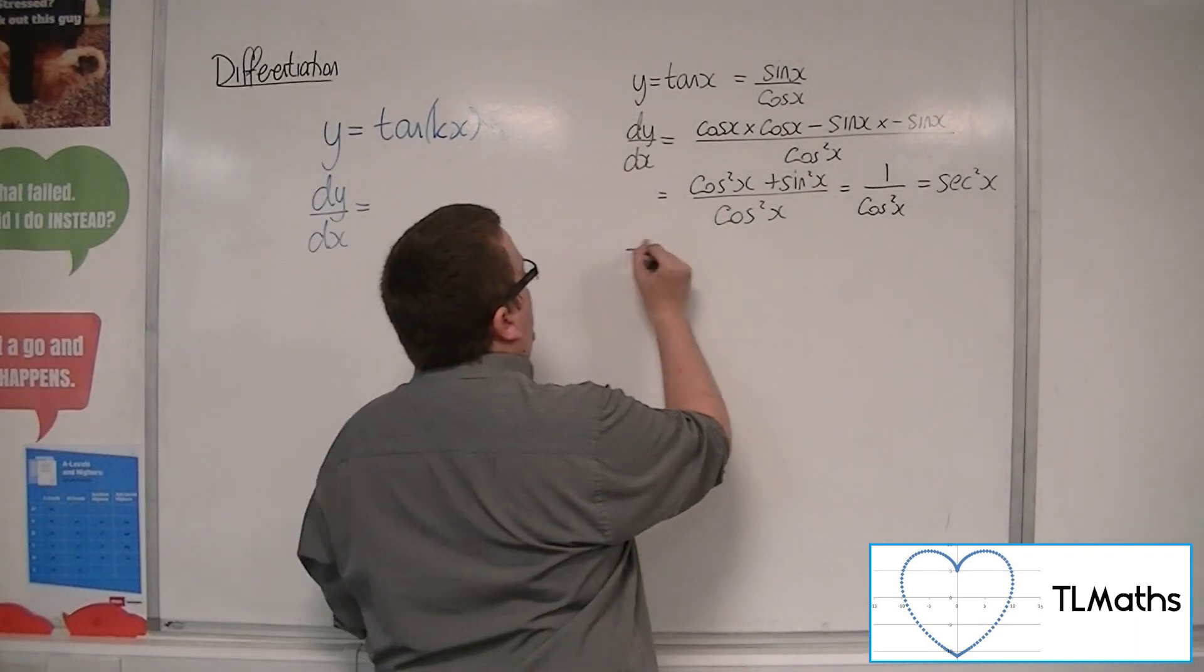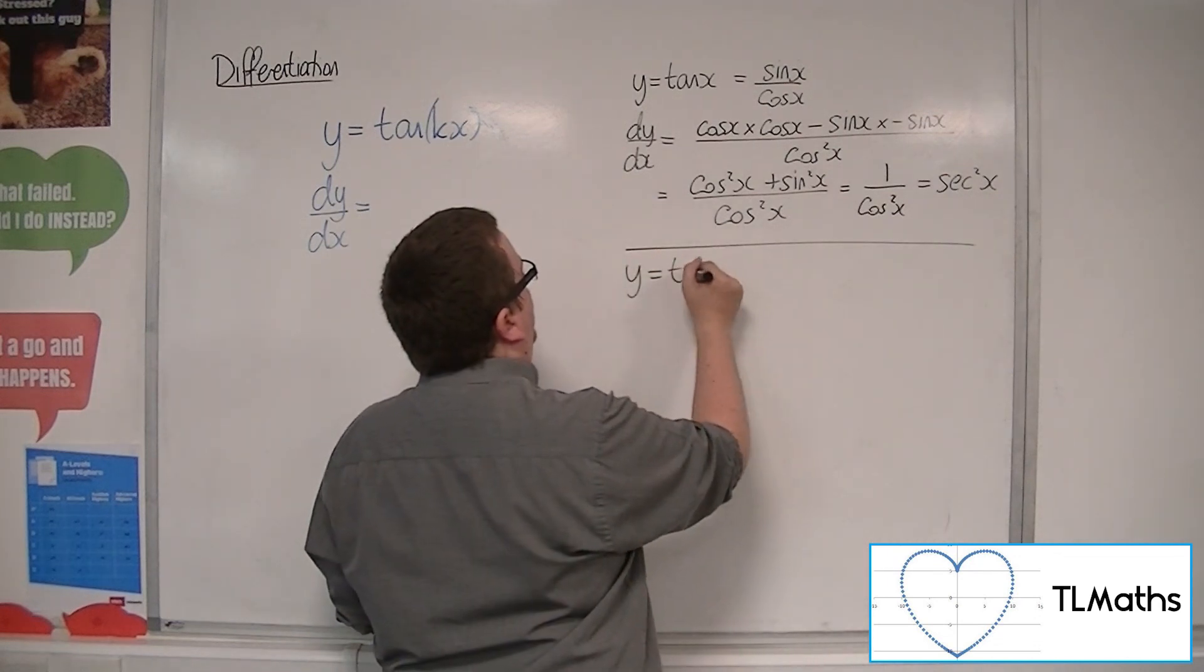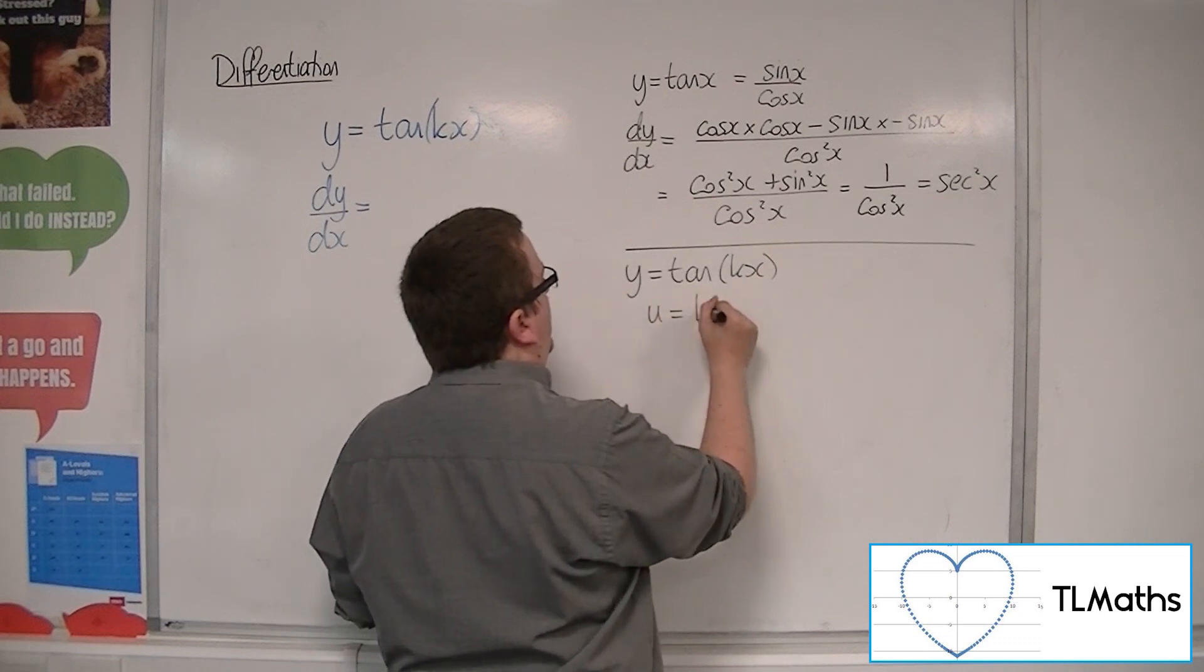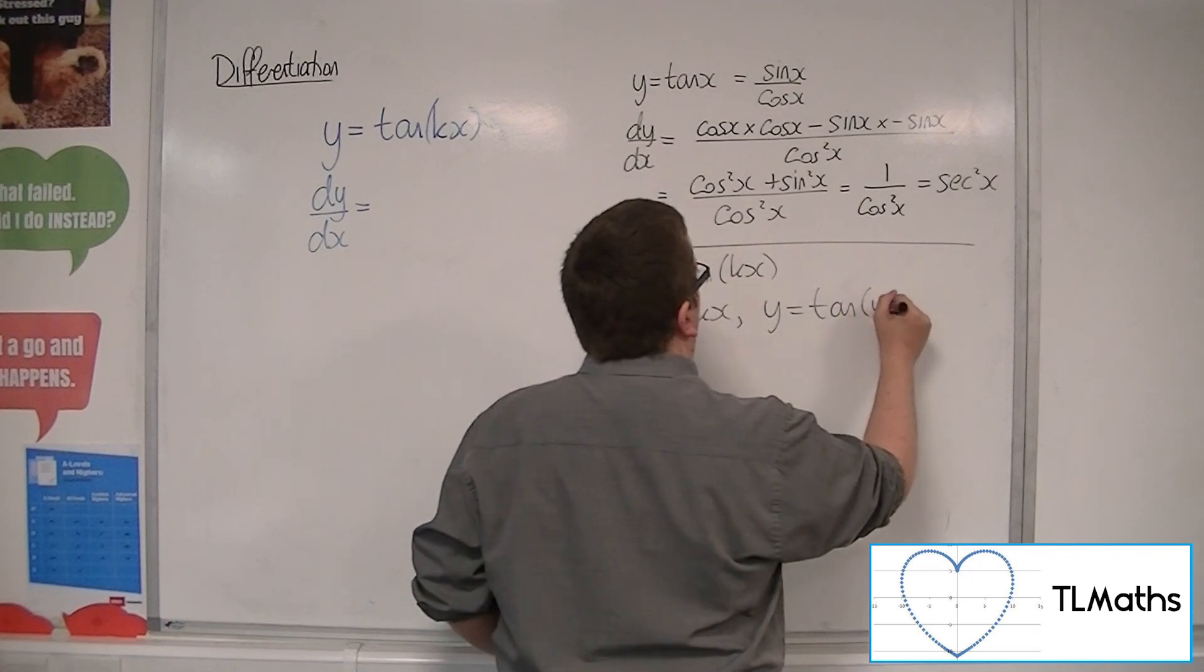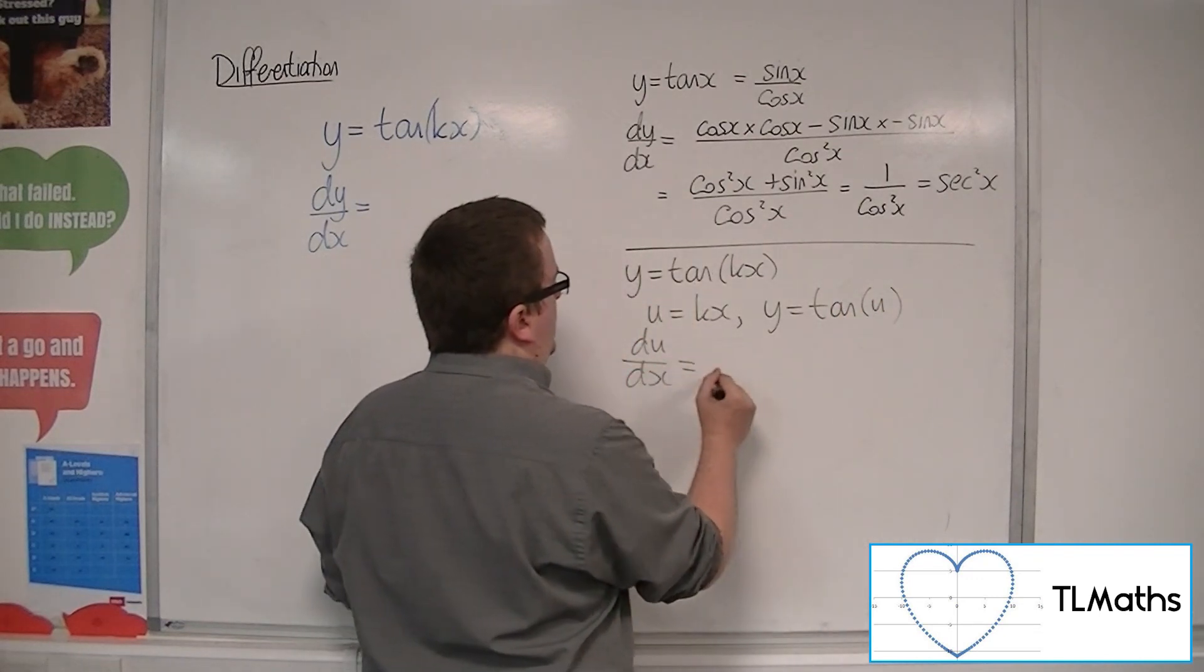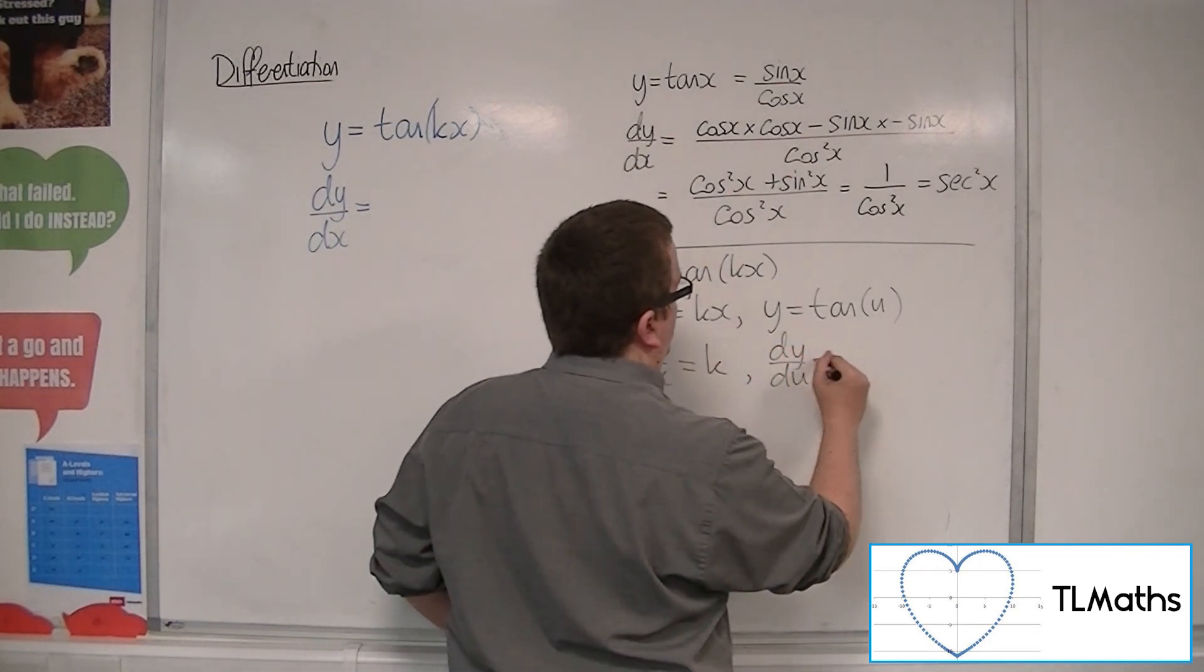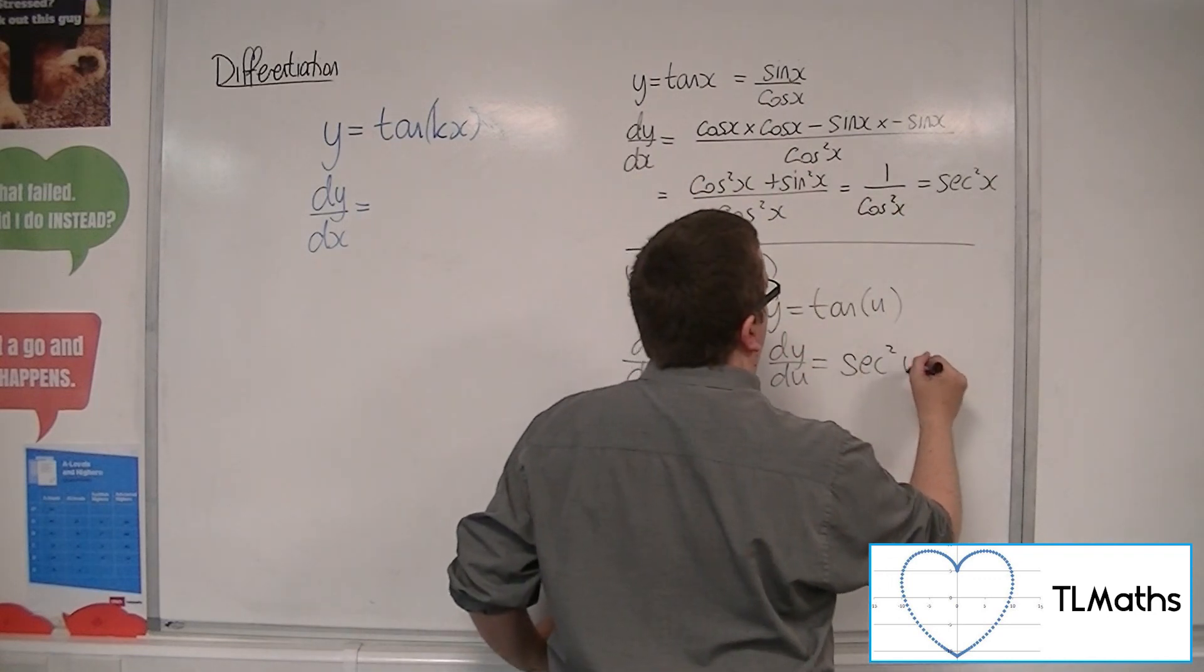So if we then said, OK, well, if that's the case, then if I've got y equals tan of kx, and I let u be the kx, then y is equal to tan of u. So du by dx is equal to k, and dy by du from this result is sec squared u.